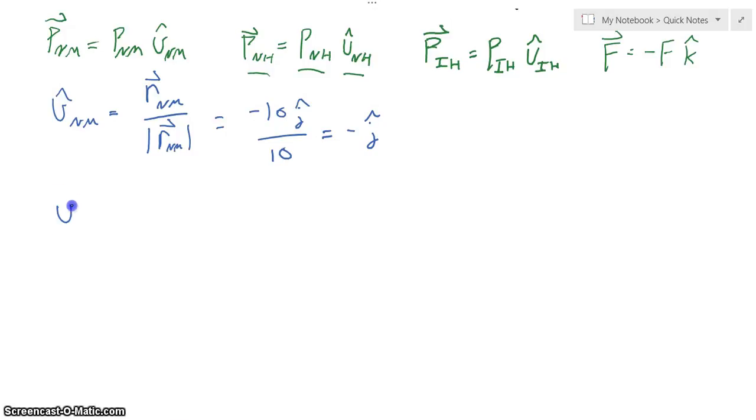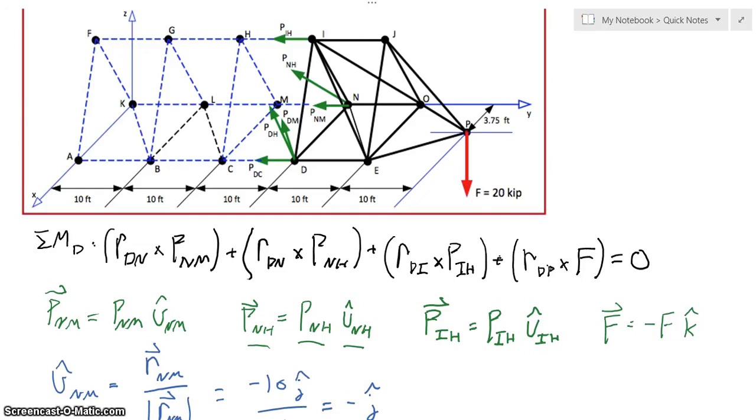Now we're going to find our next unit vector, which is going to be unh. And this is going to be significantly more difficult because it does not point directly in any one axis, and it points in all three axes. So the way we're going to identify unh is we're going to come up here. And what we're going to see is that we need to go from n to h. So how are we going to do that? We're going to move 10 feet backwards here in the y direction. We need to move, this is actually in the middle of this triangle here that you can see, so we need to move 3.75 feet this way. And then we need to come up some k amount.